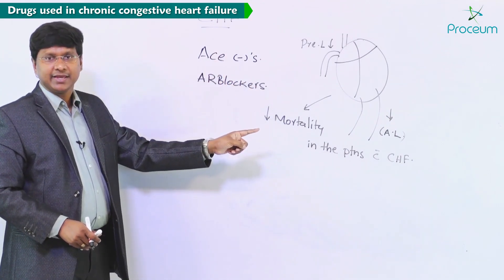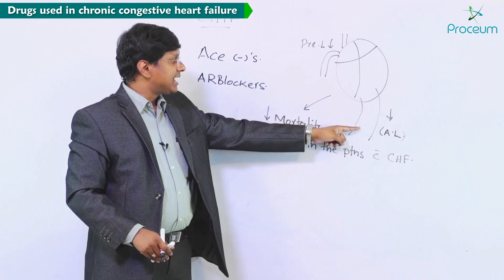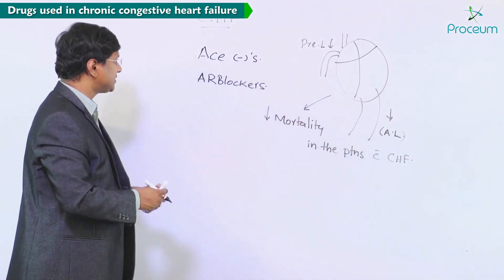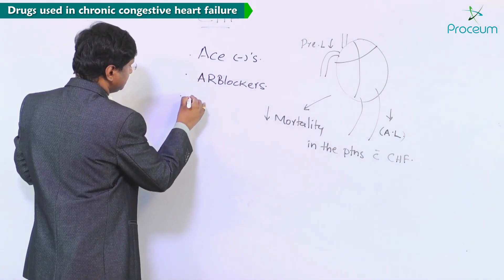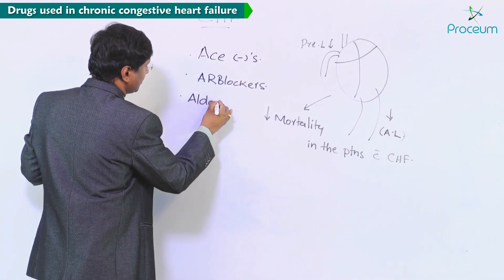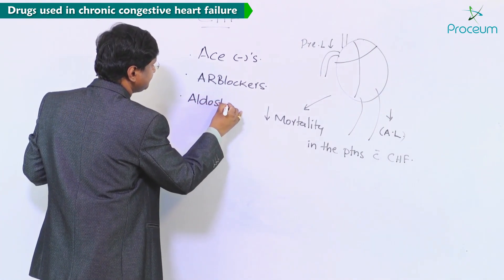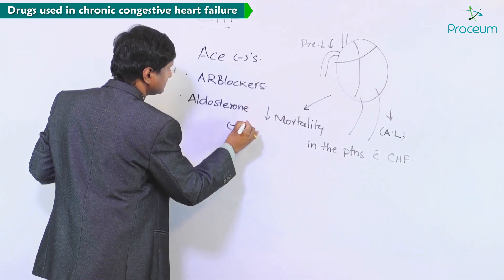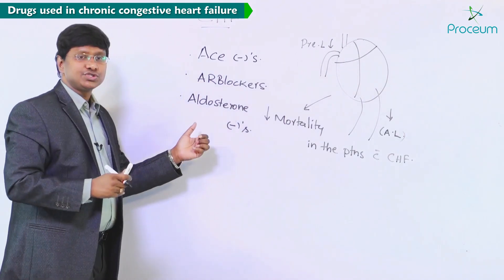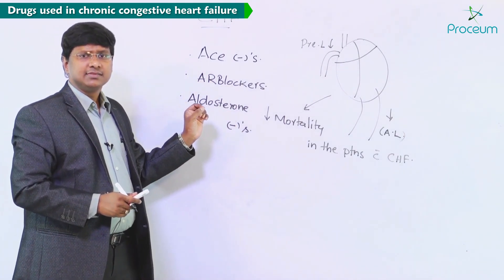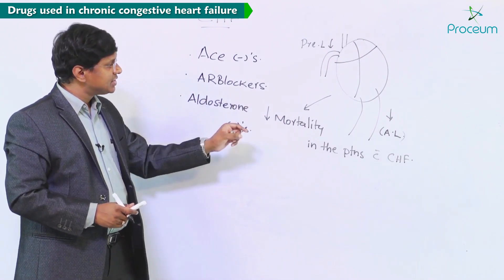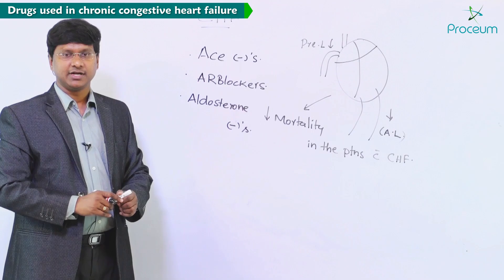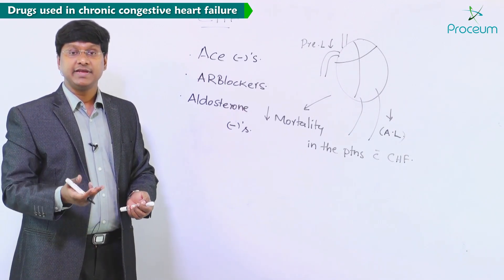We also have one more drug — aldosterone antagonists. These are very important drugs which will prevent cardiac remodeling.